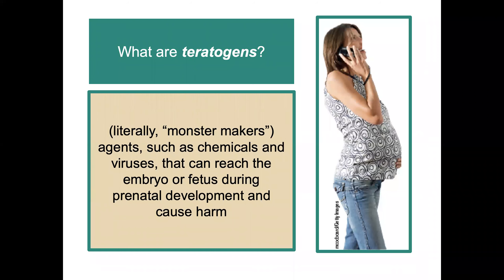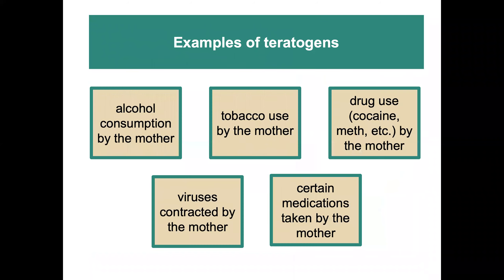What are teratogens? That word literally translates to 'monster makers.' They are agents — such as chemicals and viruses — that can reach the embryo or fetus during prenatal development and cause harm. Examples of teratogens that are very problematic to a developing baby include alcohol consumption by the mother, tobacco use, drugs such as cocaine and meth, viruses in the environment, and certain medications, which can all have a significantly negative effect.